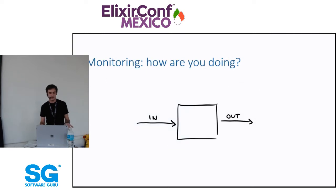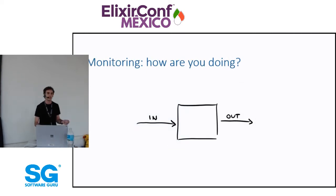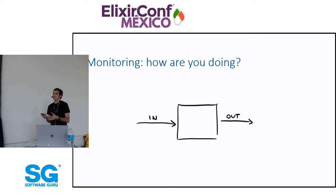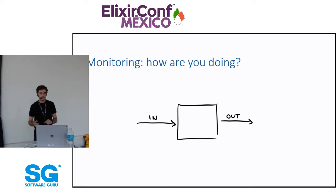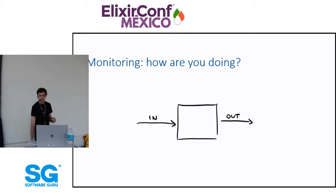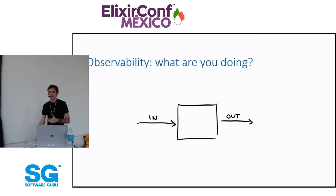The first tool for detecting problems is always monitoring. Monitoring is essentially asking your system, 'how are you doing?' — you send a health check, run a test, look at the outputs and figure out if it's what you expected. This lets you find whether there is a problem, but it doesn't tell you what the problem is. If we want to know what the problem is, we enter the concept of observability.